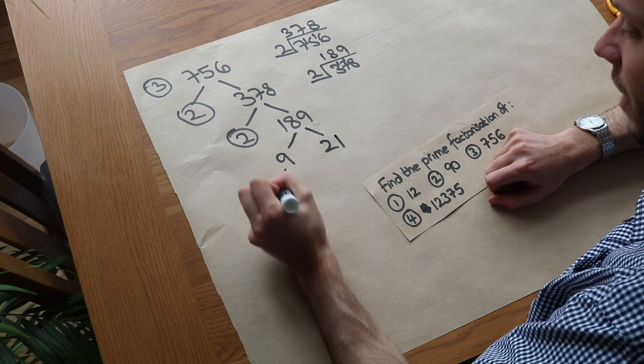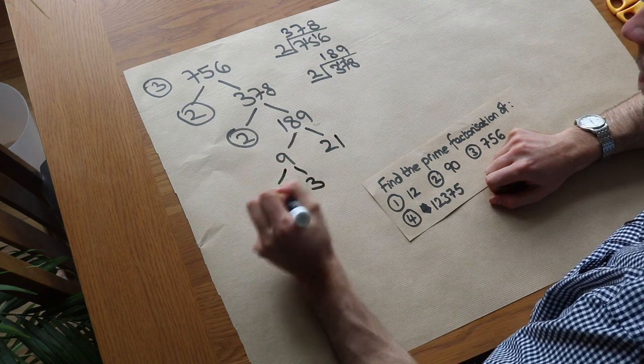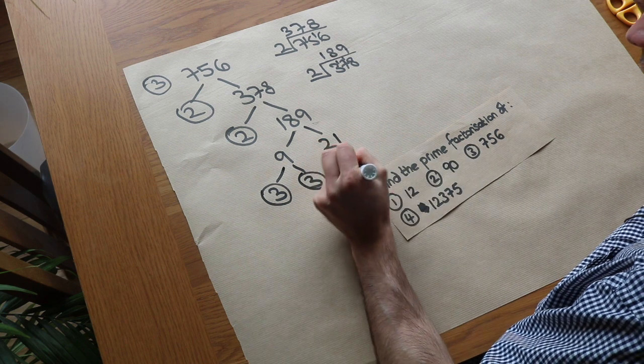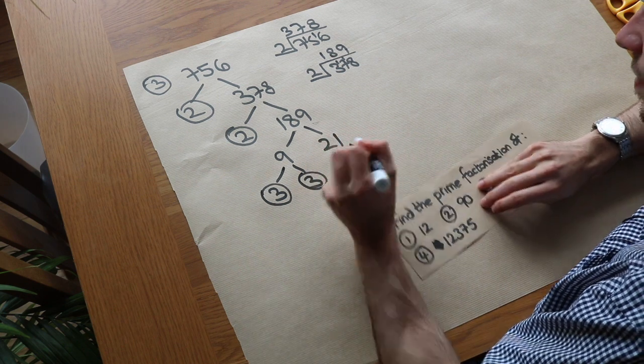Now neither of these are prime. So 9 can be split up into 3 times 3, which are both prime. And 21 is 3 times 7, which are both prime.